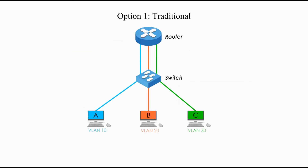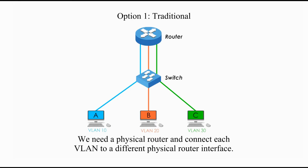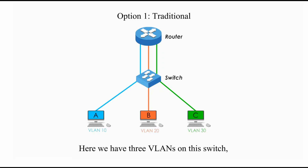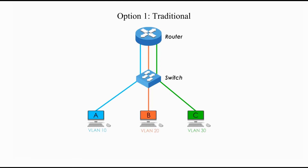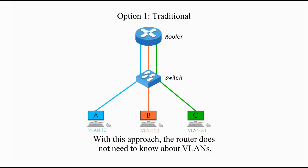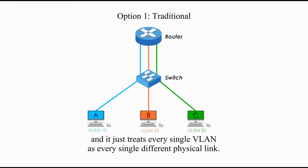Option 1: Using a router. This option is a traditional approach. We need a physical router and connect each VLAN to a different physical router interface. Here we have three VLANs on this switch — VLAN 10, 20, and 30. Each VLAN has its own physical link connected to each different physical router interface. With this approach, the router does not need to know about VLANs. It just treats every single VLAN as a different physical link.